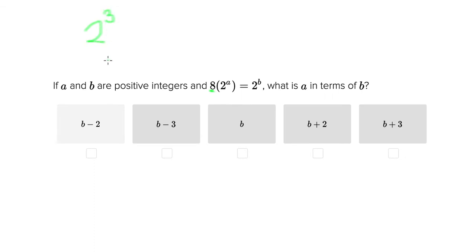2 to the 3rd is 8, 2 times 2 is 4, and 4 times 2 is 8, and we're multiplying this by 2 to the a, and we're told this equals 2 to the b.